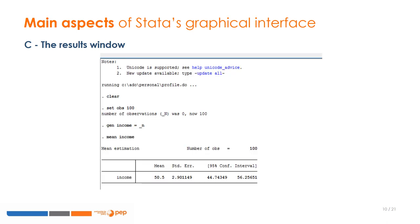The results window displays the results of the Stata commands. You can select part or the whole set of results and then right-click to copy as text or in a tabulated format.